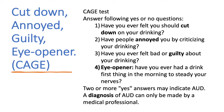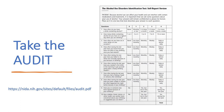Here is the quick 4-question CAGE test, which stands for Cut Down, Annoyed, Guilty, Eye-Opener. The yes-or-no questions are: Have you ever felt you should cut down on your drinking? Have people annoyed you by criticizing your drinking? Have you ever felt bad or guilty about your drinking? Have you ever had a drink first thing in the morning to steady your nerves? Two or more yes answers may indicate AUD. A diagnosis can only be made by a medical professional.